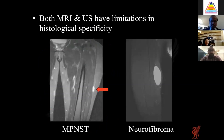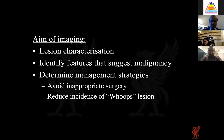Both MRI and ultrasound have limitations on histological specificity, as demonstrated by two cases showing fluid-sensitive MRI sequences of the thigh in similar positions. The signal intensity of both lesions is somewhat similar, but the histological types are very different — one being a malignant nerve tumour and the other a benign neurofibroma. The aim of imaging is to characterise a lesion, identify features that suggest malignancy, help determine management strategies, avoid inappropriate surgery, and reduce the incidence of so-called 'whoops' lesions.